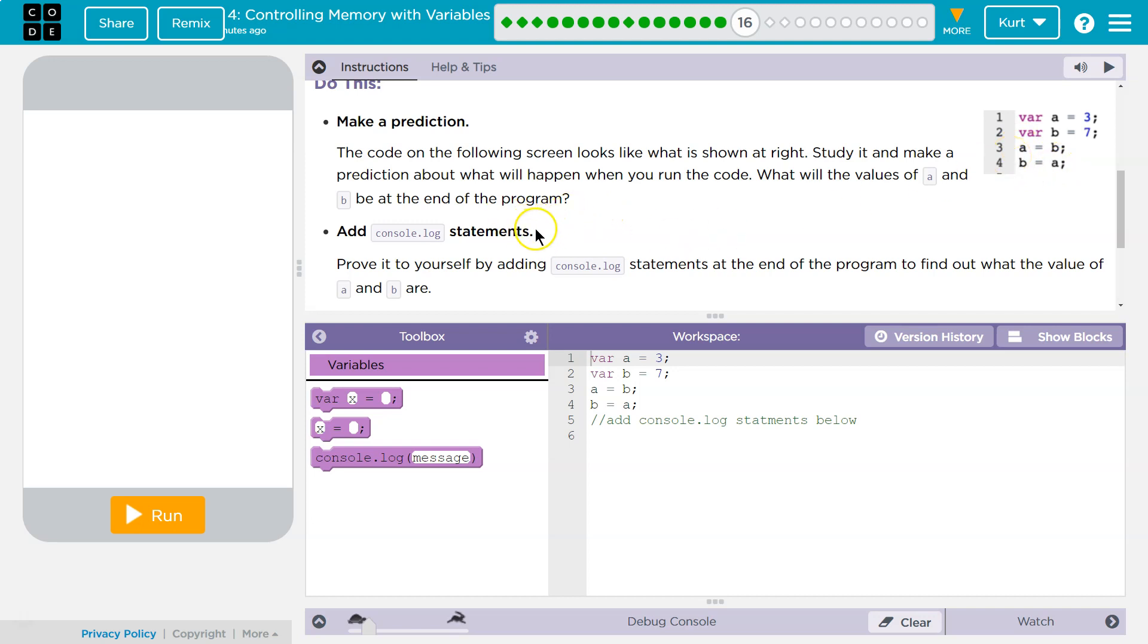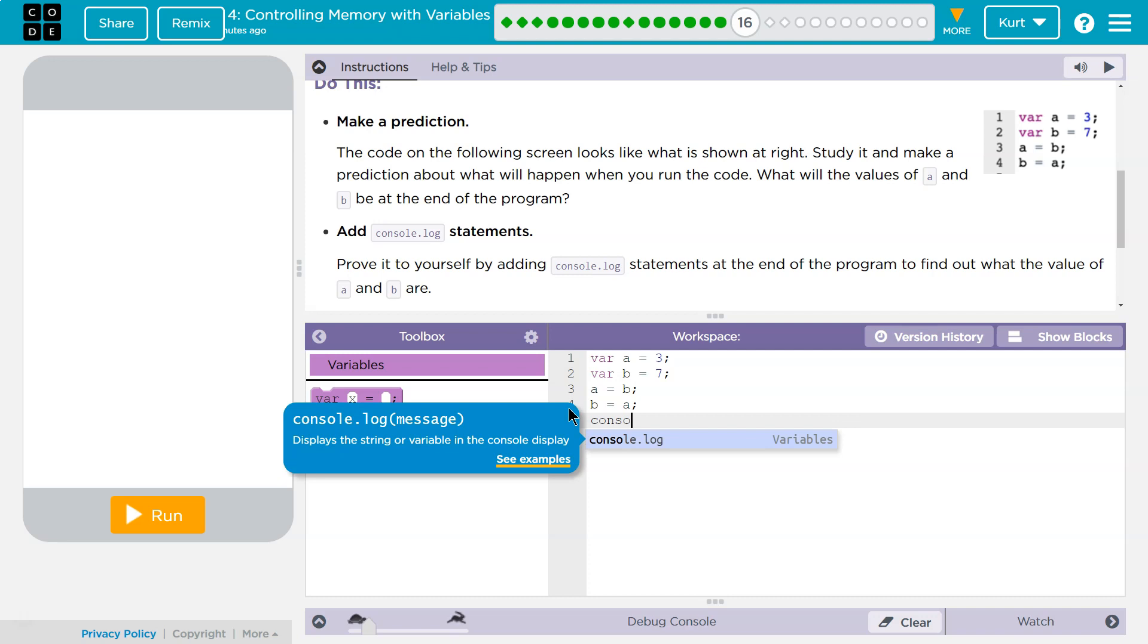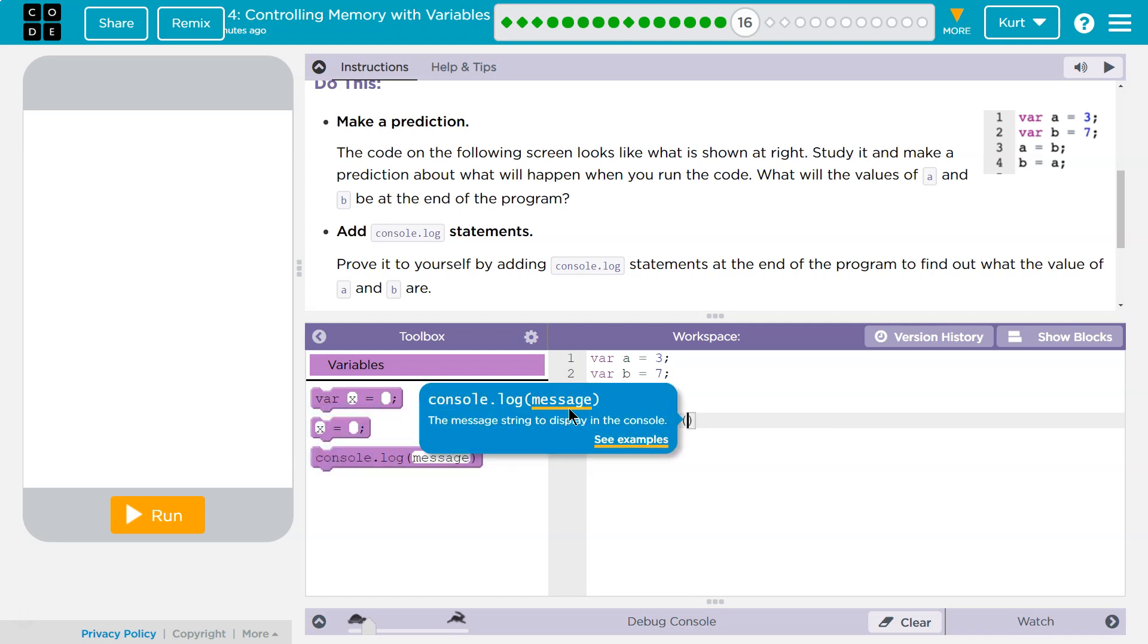Add a console log statement. Prove it to yourself by adding console log statements at the end of the program to find out what the values of a and b are. We're going to do one better, okay. Because I do want to know here, I'm going to hit tab twice and it will add that line. I do want to know here what a is, okay?